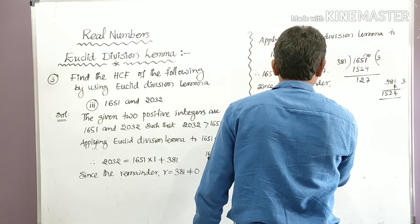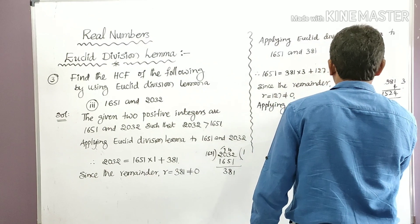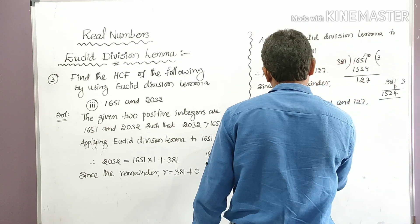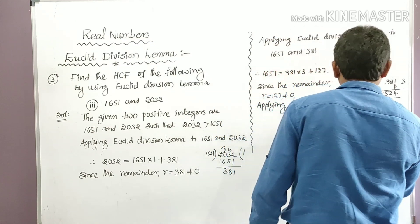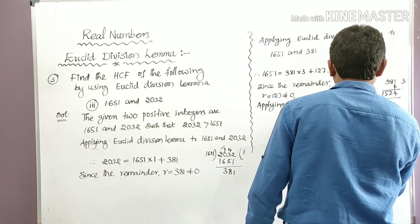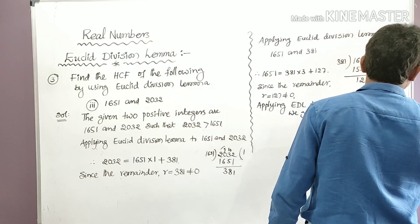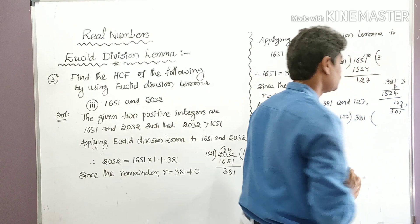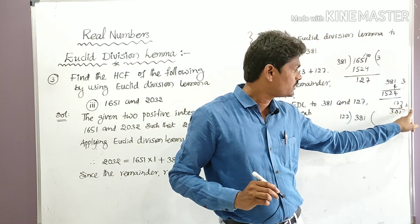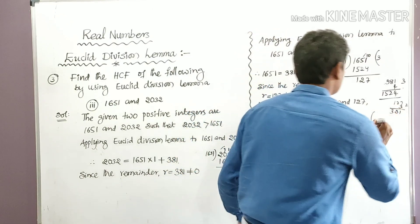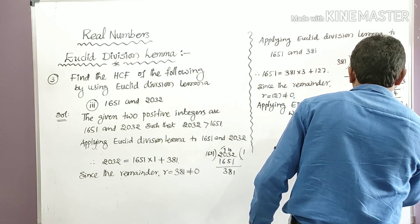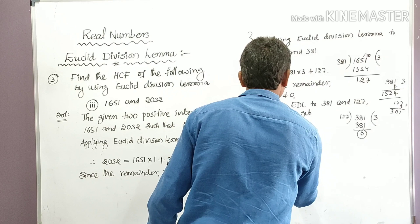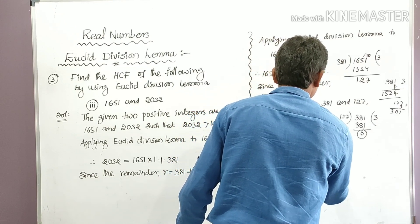Applying Euclid's Division Lemma to 381 and 127. Dividing 381 by 127: 127 × 3 = 381 exactly — 3×7=21, 3×2=6+2=8, 3×1=3; so 127 × 3 = 381. The remainder is 0. Therefore: 381 = 127 × 3 + 0.